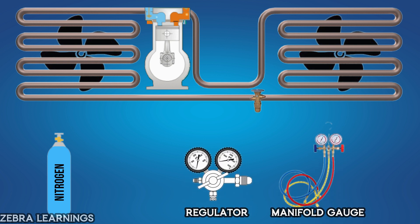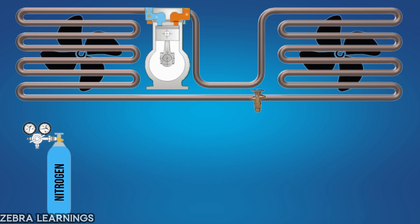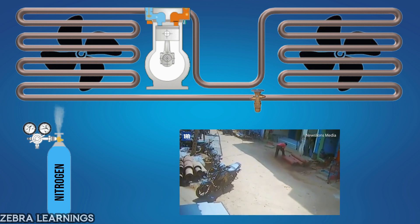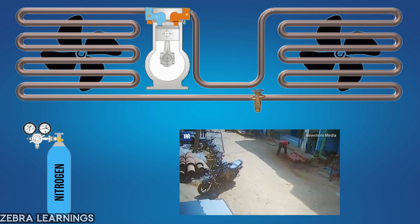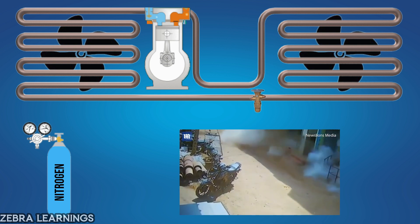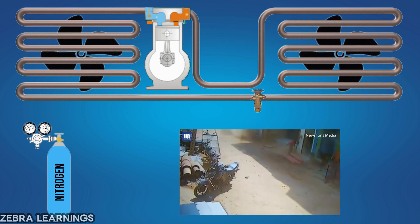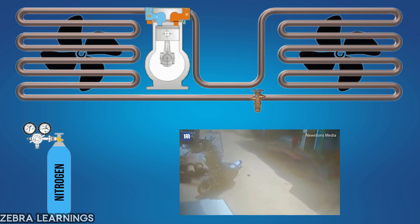First, connect the regulator to the nitrogen cylinder. Always remove the regulator from the cylinder when you are finished using it. Leaving the regulator attached to the cylinder increases the risk of a nitrogen leak, as any accidental impact can damage the regulator, weakening its seals and connections. Nitrogen is stored in cylinders at very high pressure and a leak can be dangerous. Therefore, always remove the regulator when you are finished using it.